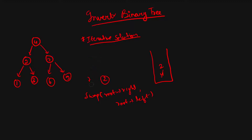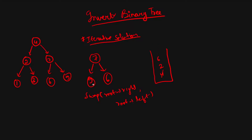Then we pop the next top element, which is seven. We push its left and right children, then swap them — so nine and six get swapped. We pop nine next: its left and right are both null, so swapping null and null makes no difference. Then we pop six, which also has null children, so it remains the same.